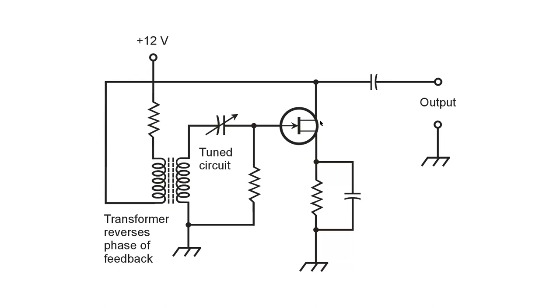So there you have it. It's just basically a class A junction field effect transistor amplifier. In this case, N-channel. It has positive feedback at a controlled frequency. An Armstrong oscillator, this is called.